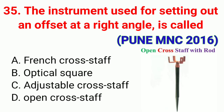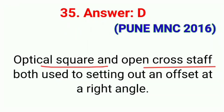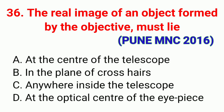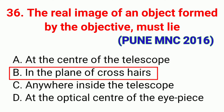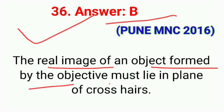Question number thirty-five: The instrument used for setting out an offset at a right angle is. The correct answer is option D. Question number thirty-six: The real image of an object formed by the objective must lie. The correct answer is option B, in the plane of crosshairs.